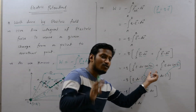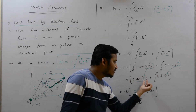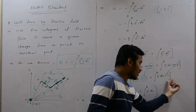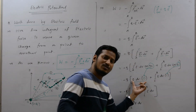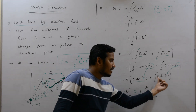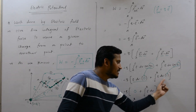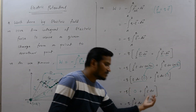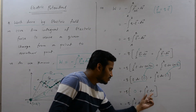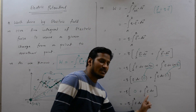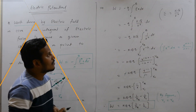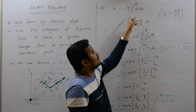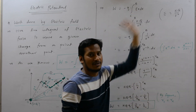Since cos 90° equals 0, the integral over path A to C becomes zero — zero into any value is zero. Since cos 0° equals 1, the integral over path C to B gives E dot dr as it is. So the equation reduces to negative Q times the integration from C to B of E dot dr.